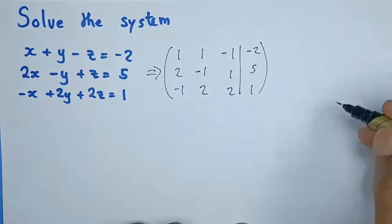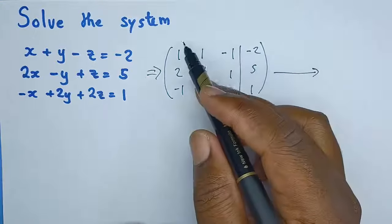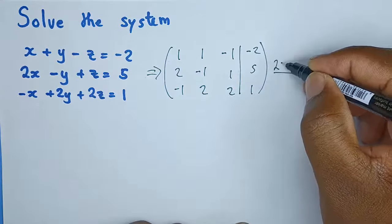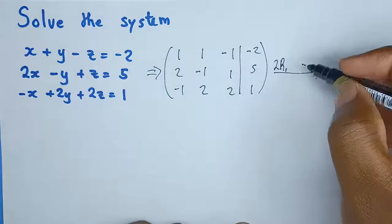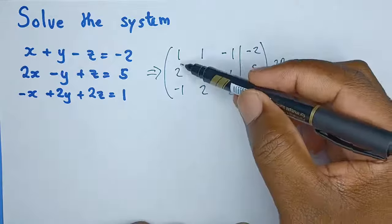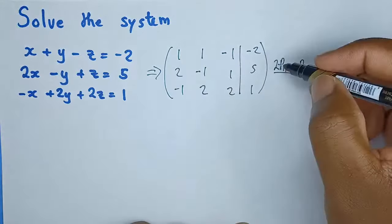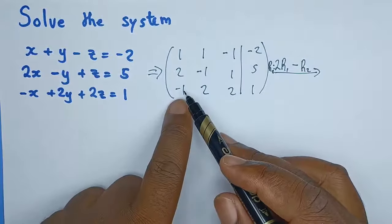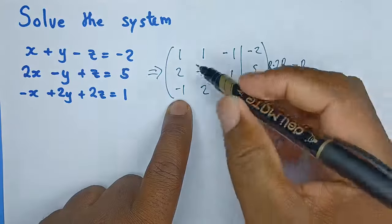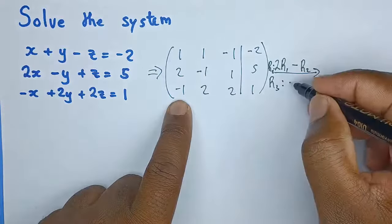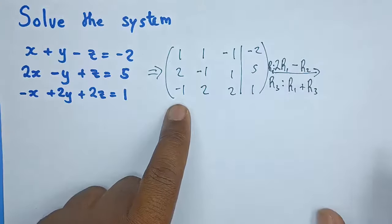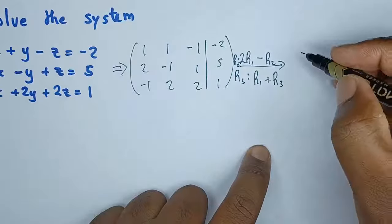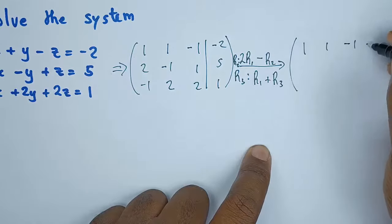In our first row we're okay because we already have a 1 here, but in row 2 we need a 0. To get that 0, we're going to multiply row 1 by 2 then subtract row 2, so that gives us a 0. Remember, this operation is being applied on row 2. For row 3, we need a 0 there as well. We're going to add row 1 and row 3 because 1 and negative 1 add to give a 0. Row 1 has not been changed, so row 1 remains: 1, 1, negative 1, negative 2.